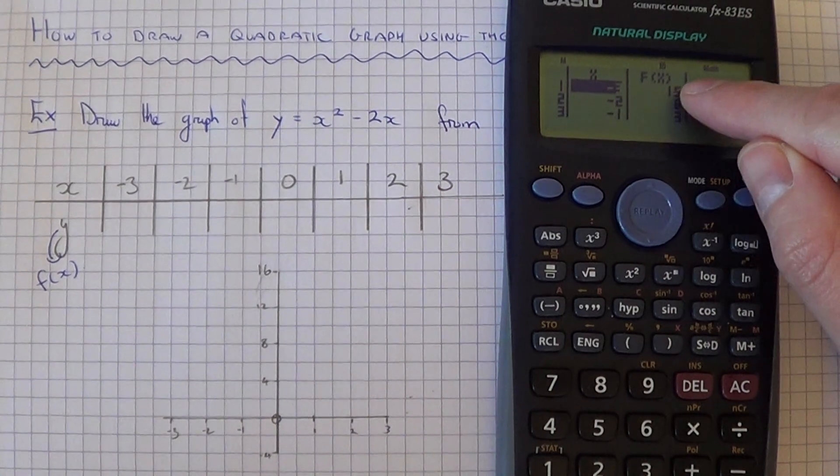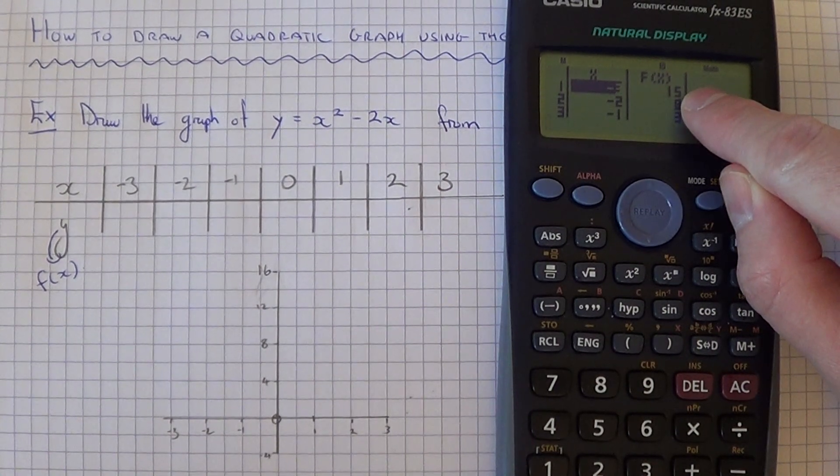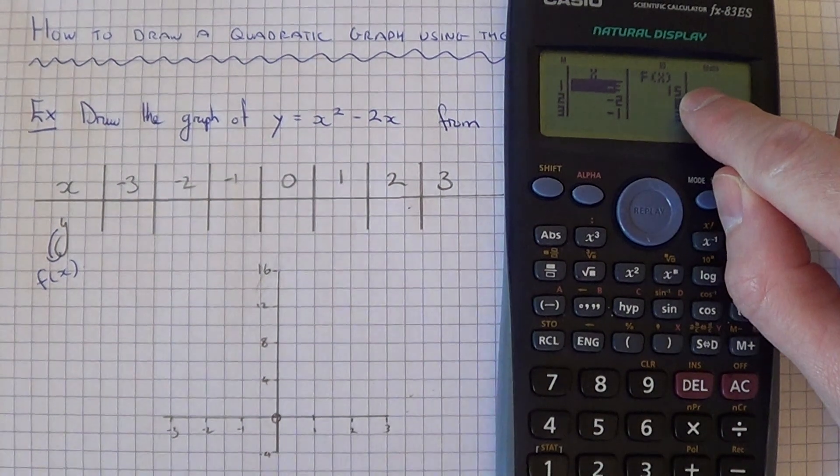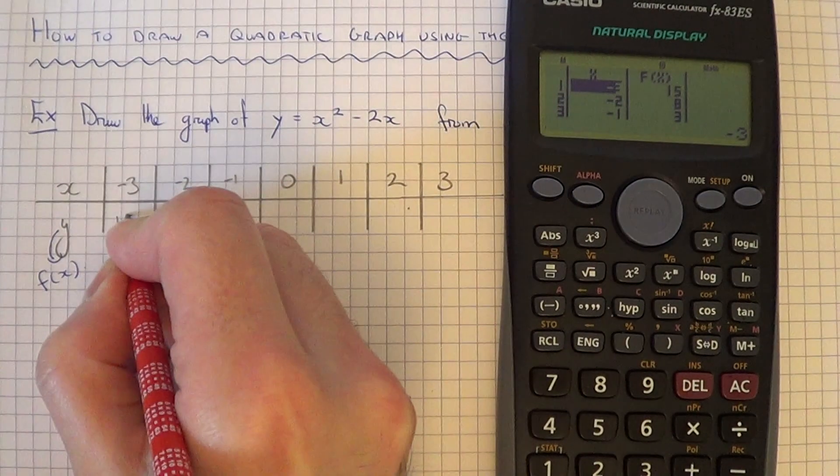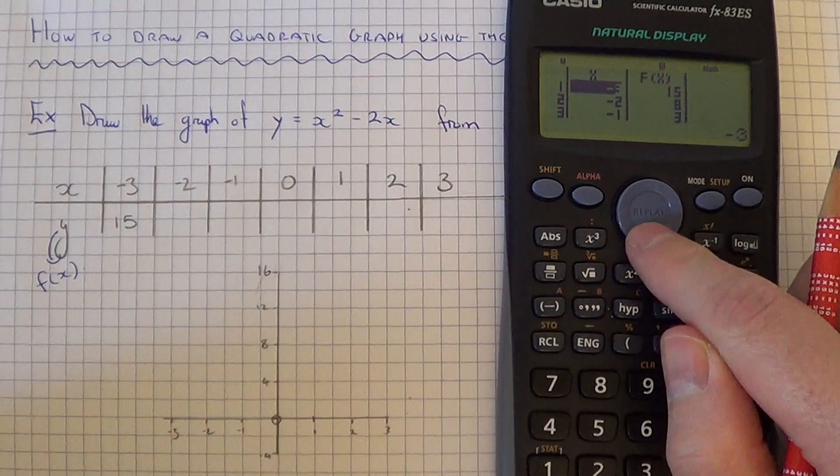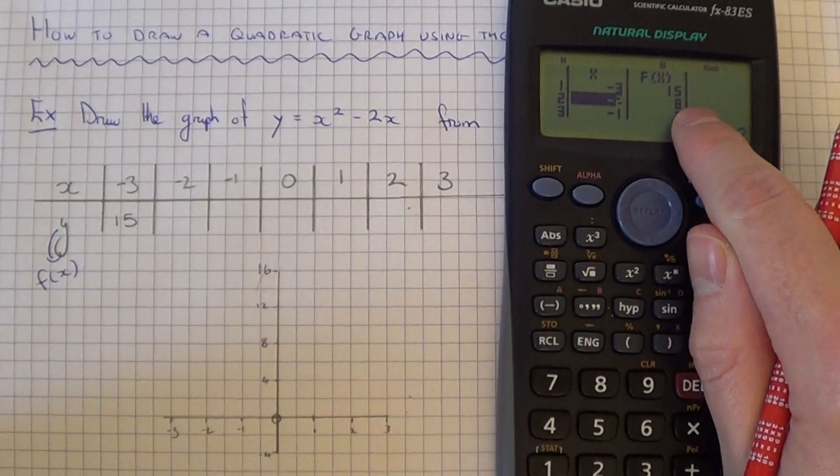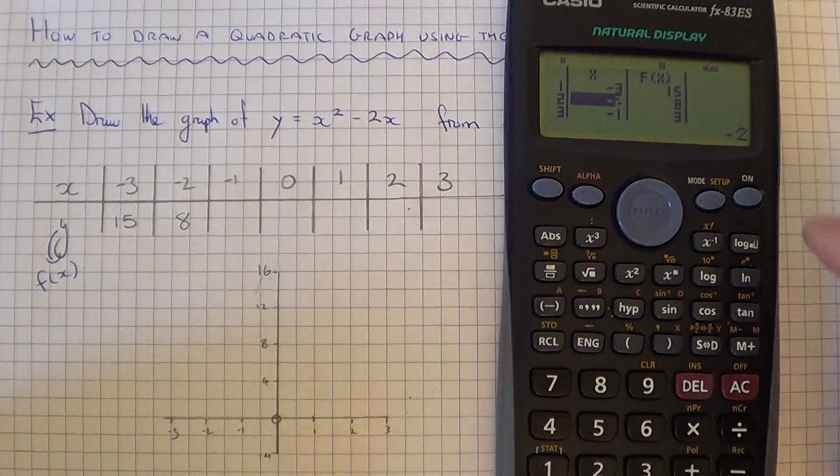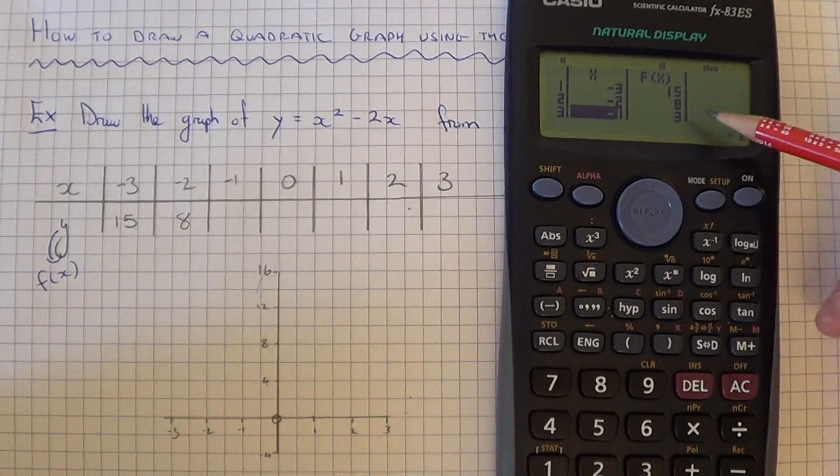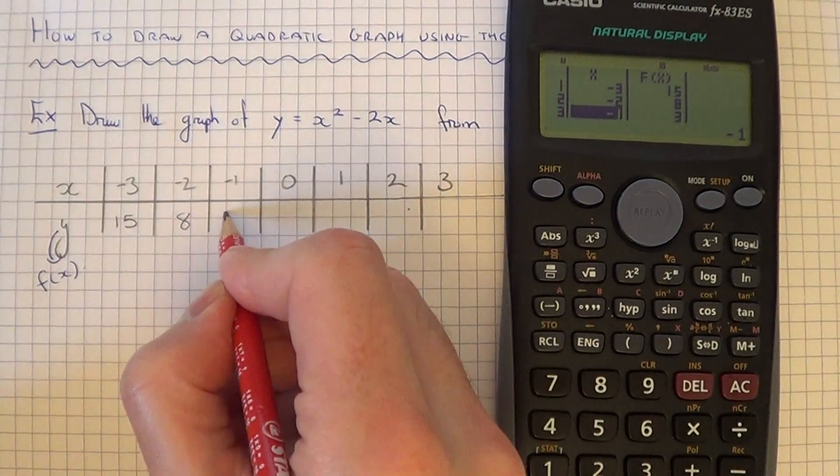When x is minus 3, the y coordinate, which is the last column here, is 15. So we can fill that one in. When x is minus 2, the y coordinate is 8. When x is minus 1, the y coordinate is 3.